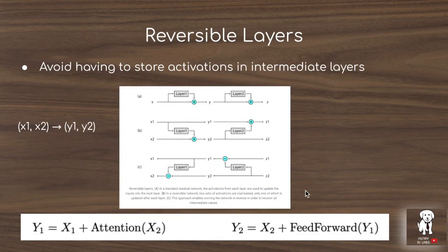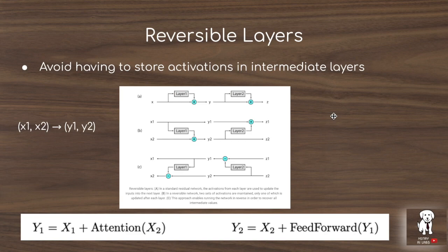We'll start looking at the Reformer with reversible layers, as it's a bit easier to understand than the LSH attention approximation. Reversible layers, also presented in RevNet, avoid storing activations in intermediate layers. These transformer networks are composed of blocks where you pass the query, key, and value matrices into the self-attention layer and then a feed-forward layer. You repeat this block 6 to 12 times, forming a deep neural network, so memory requirements grow with the number of layers.